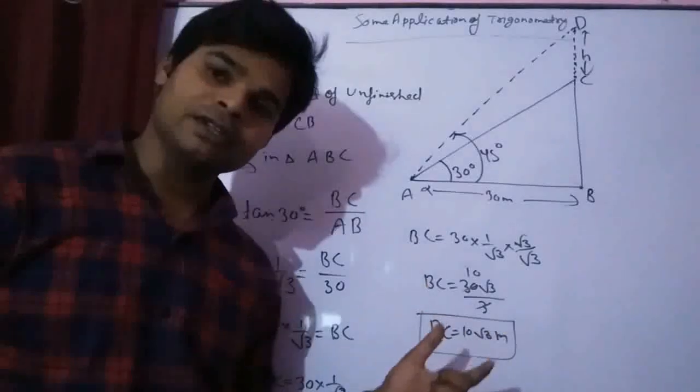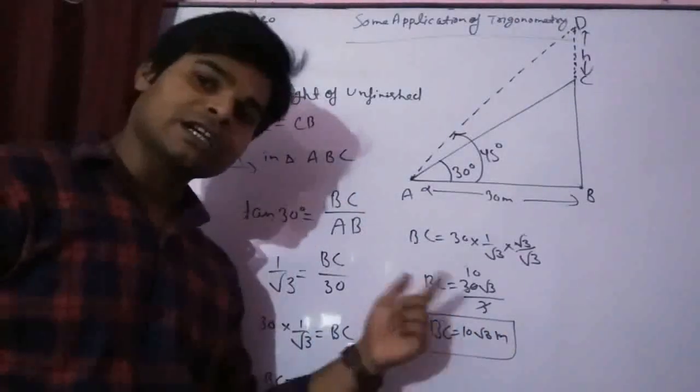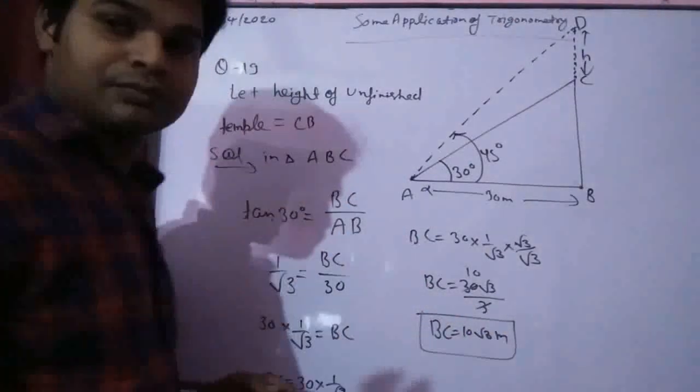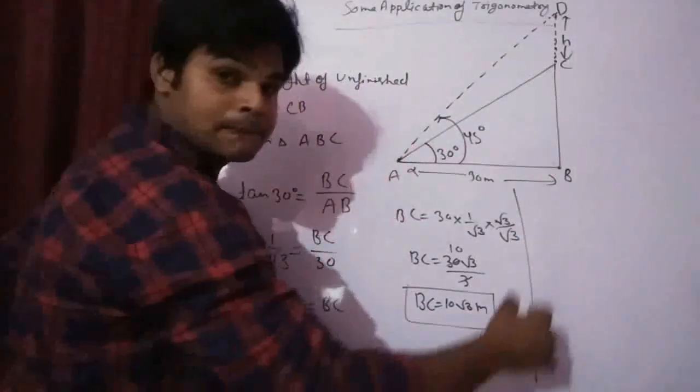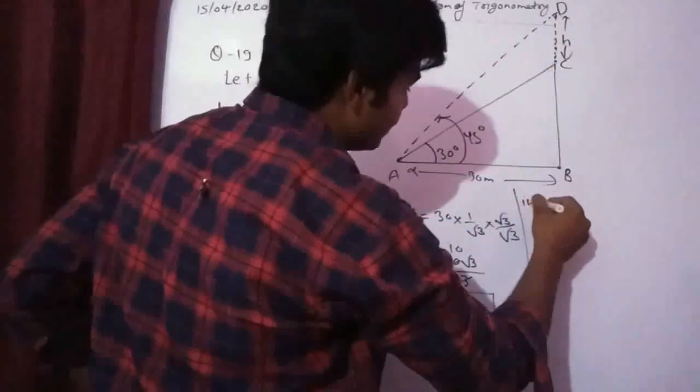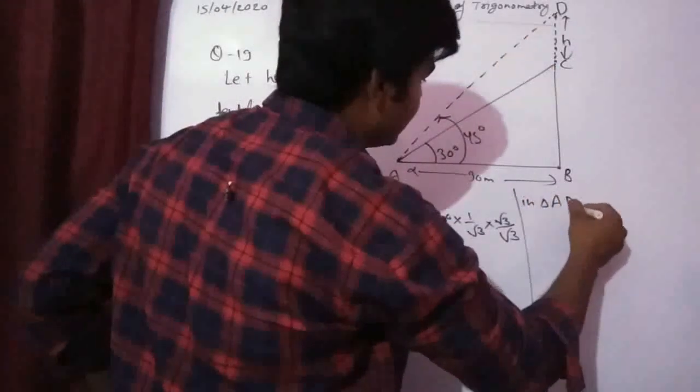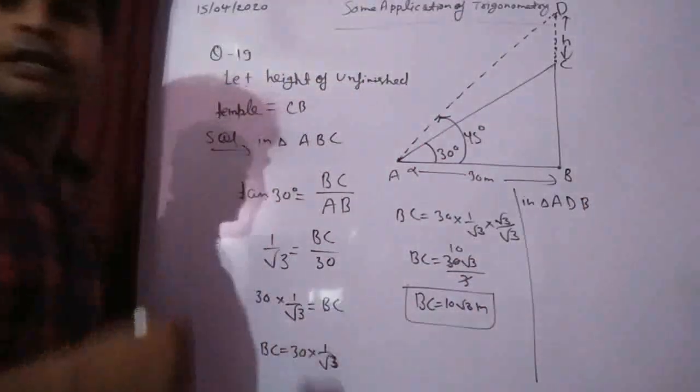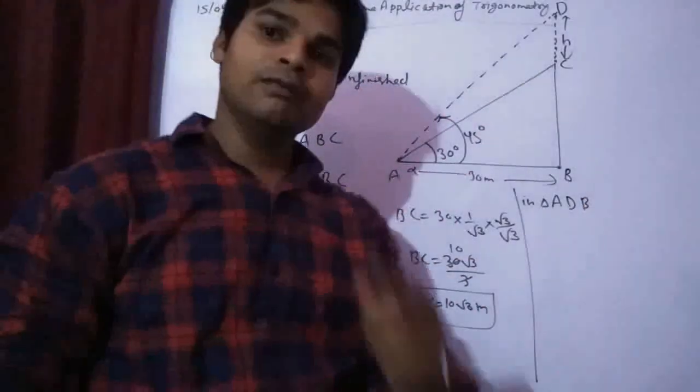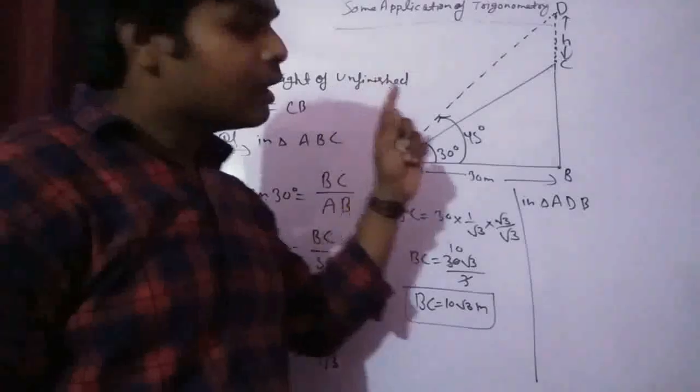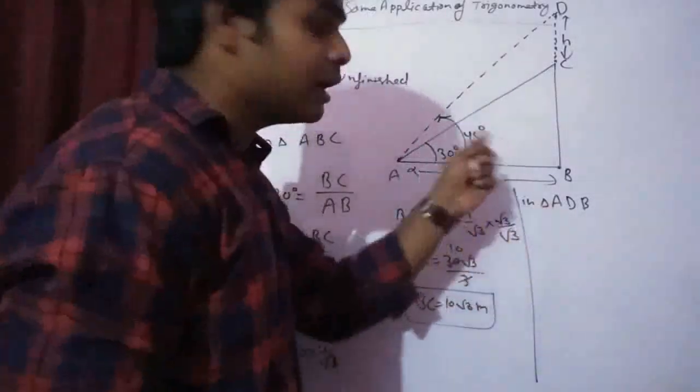We get the height of the unfinished temple. Now we solve the second part. In triangle ADB, we calculate again by applying tan theta.